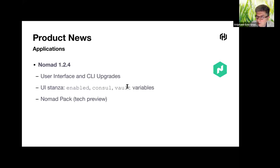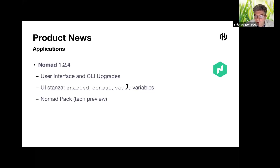The new Nomad release introduces a new type of job named 'sysbatch' — system batch. These jobs are used for one-off cluster-wide, short-lived tasks like backups or collecting data across all nodes. A new 'ui' stanza has been created to configure the Nomad agent web UI, allowing you to enable or disable it and integrate Consul and Vault web UIs directly in the Nomad UI.